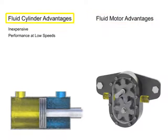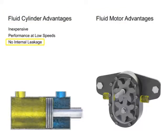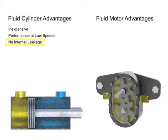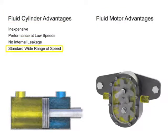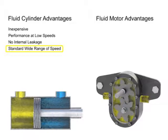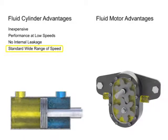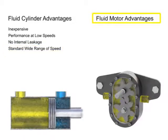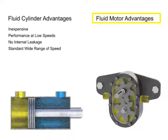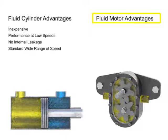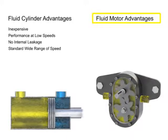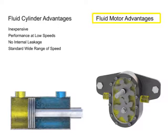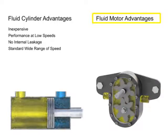A cylinder with leak-tight seals can be operated over a wide range of speed, under changing loads, and with reasonably consistent performance. A fluid motor can only perform similarly if it's designed with precision tolerances to reduce its natural internal leakage, which increases cost.